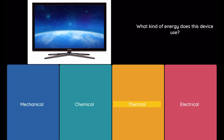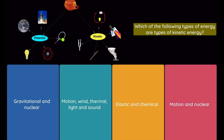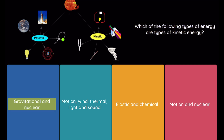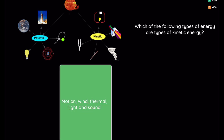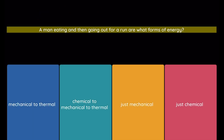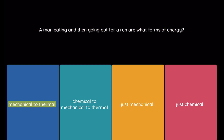Option 3: thermal. Option 4: electrical. Question: Which of the following types of energy are types of kinetic energy? Option 1: gravitational and nuclear. Option 2: motion, wind, thermal, light, and sound. Option 3: elastic and chemical. Option 4: motion and nuclear. Question: A man eating and then going out for a run are what forms of energy?